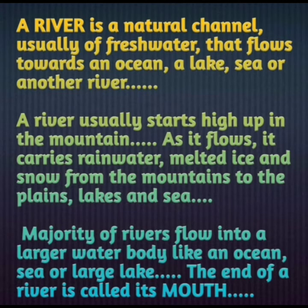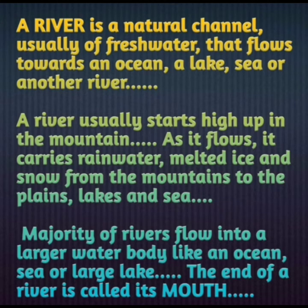A river usually starts high up in the mountains. As it flows, it carries rainwater and melted ice and snow from the mountains to the plains, lakes and sea. Rivers originate in the mountains as waterfalls, and as they descend to the plains they grow wider, adding snowmelt and other rivers. By the time they reach the plains they become a vast body of water, and their speed also reduces because the plains are flat.